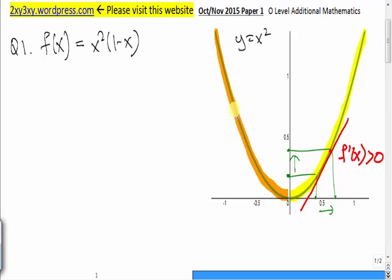For this region of the graph here, if we increase the value of x, we notice that the y value will decrease. Hence, this region of the graph, we call this a decreasing function.